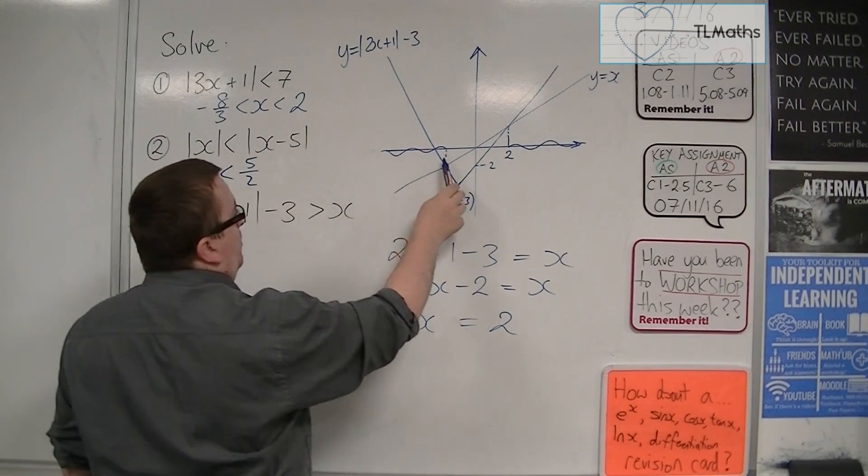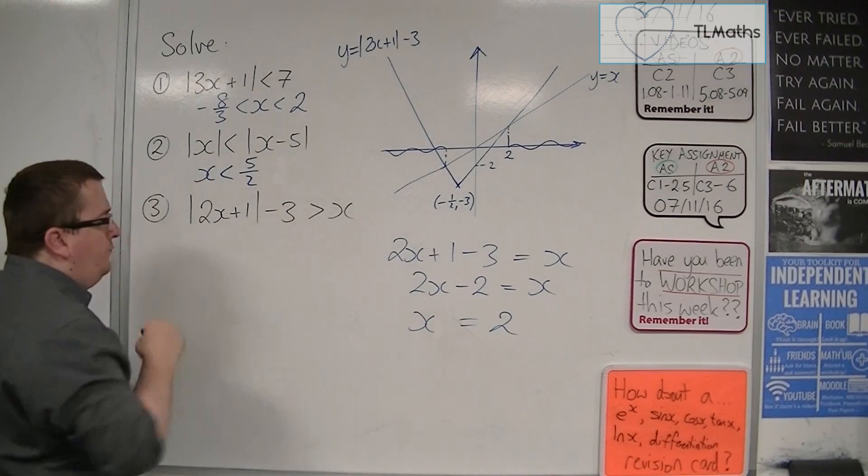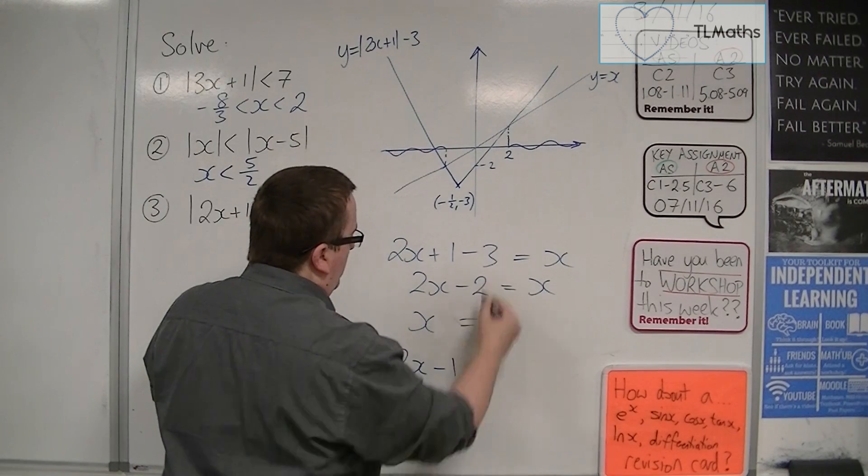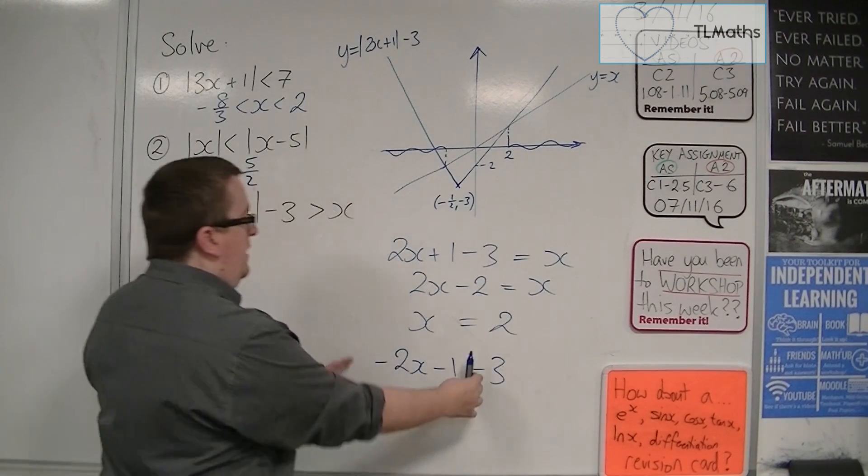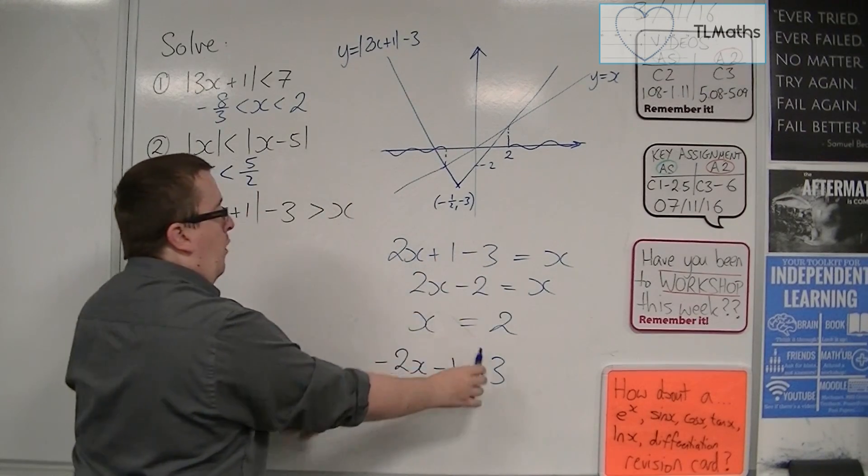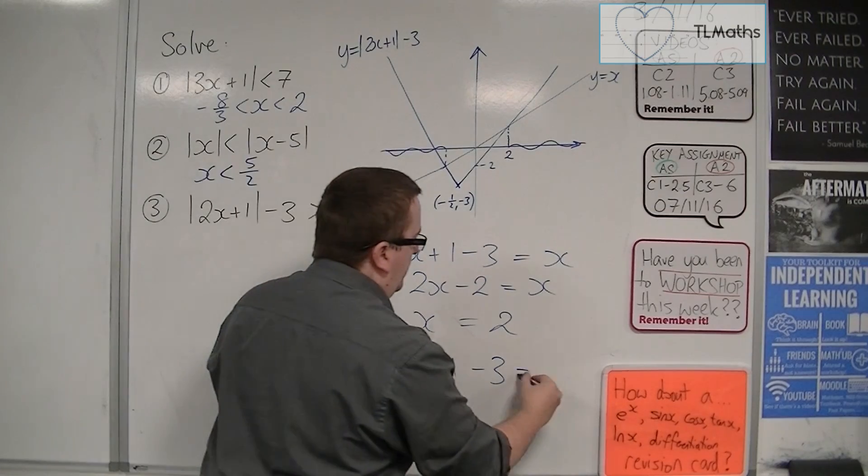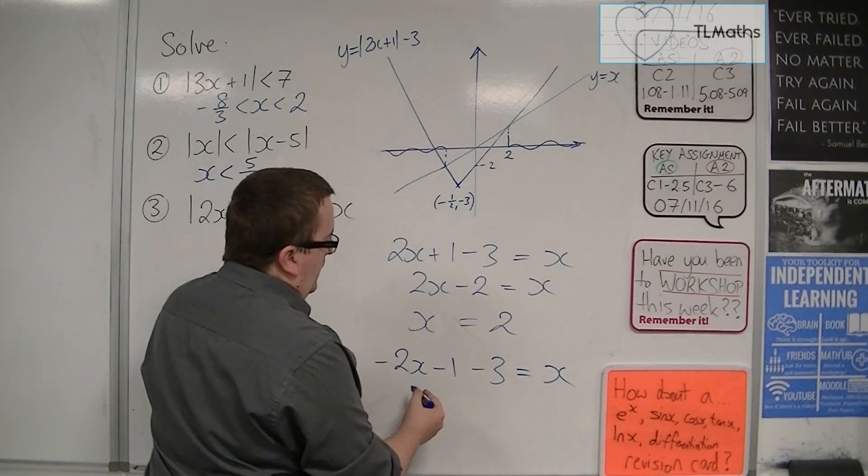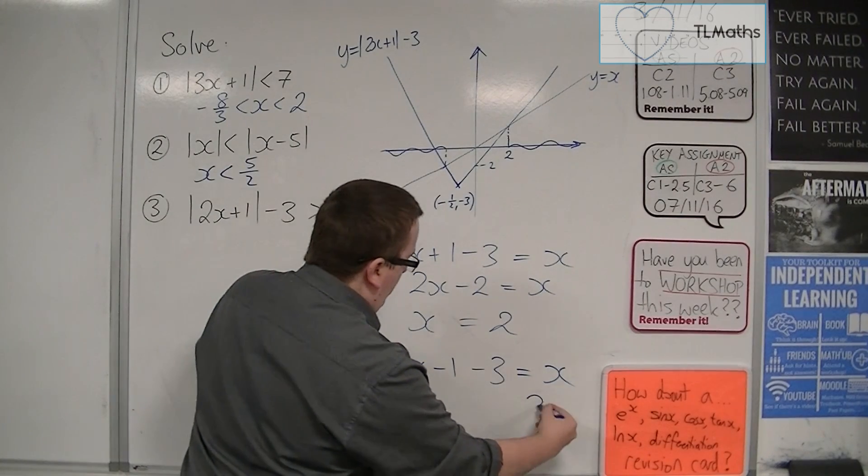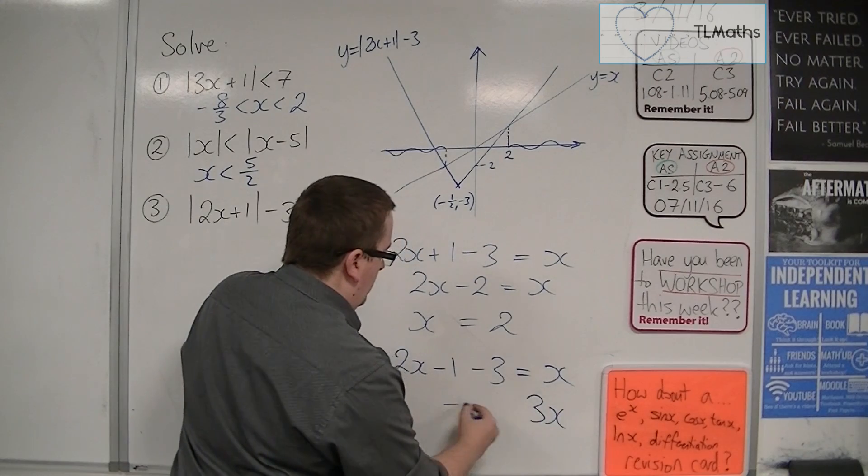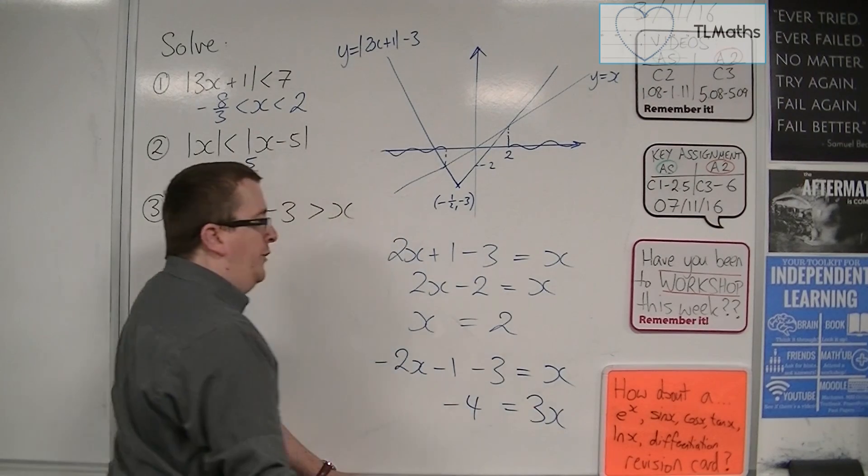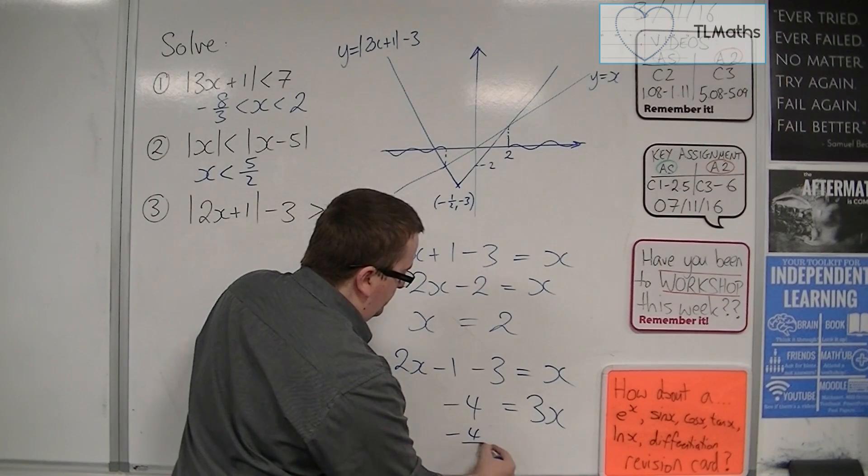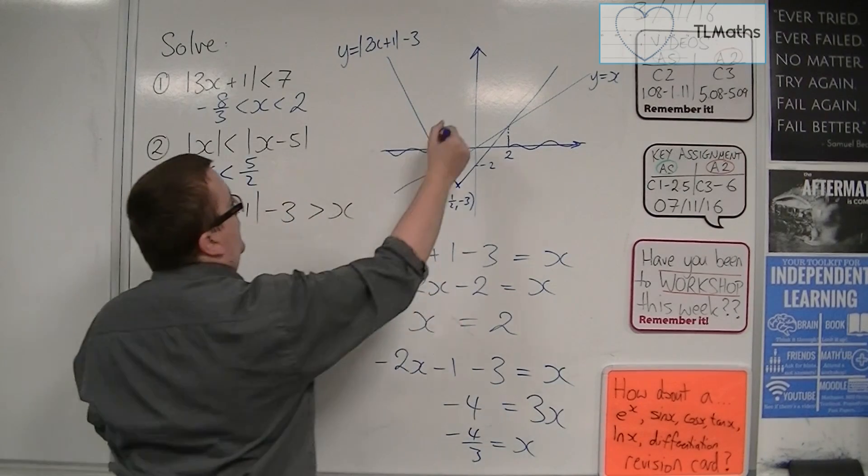And then we want this point here, don't we? So we can do a similar case, but this time minus 2x minus 1. I've still got the minus 3, so I'm just changing the sign of what was inside the modulus. I've still got that equals x on the outside. So I'm going to add the 2x to both sides this time, leaving me with minus 4 is equal to 3x. Divide both sides by 3, so x is minus 4 thirds.